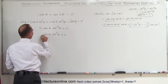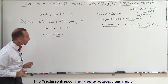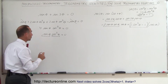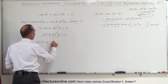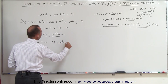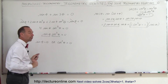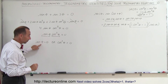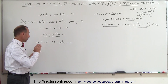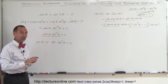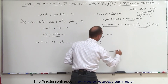We have a product — sine of theta times cosine squared theta equals zero. Whenever two things multiply to give zero, one or the other must equal zero. So either the sine of theta equals zero, or the cosine squared of theta equals zero. We can solve these two independently. If sine of theta equals zero, then theta can be zero or pi, because sine of zero is zero and sine of pi is zero.